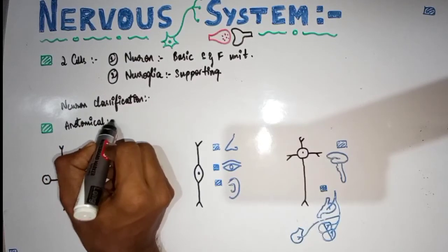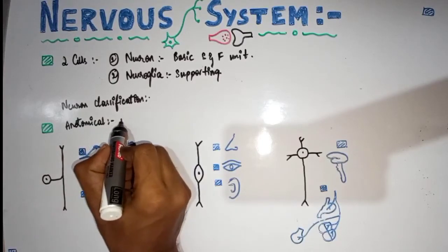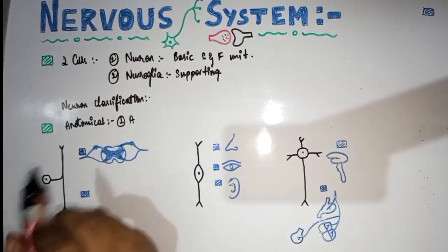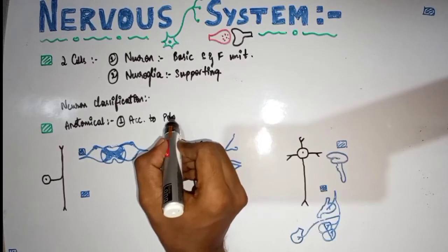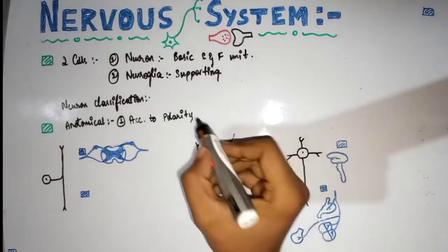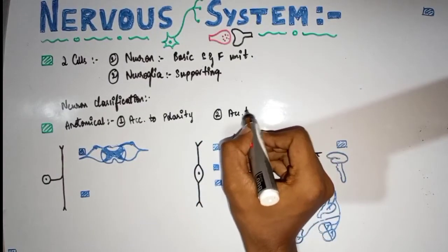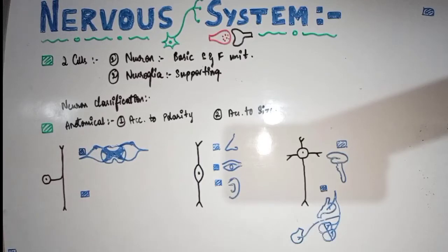Within the anatomical classification there are two ways of classifying neurons. The first way is according to polarity, and the second type of anatomical classification is according to the size of the neuron.